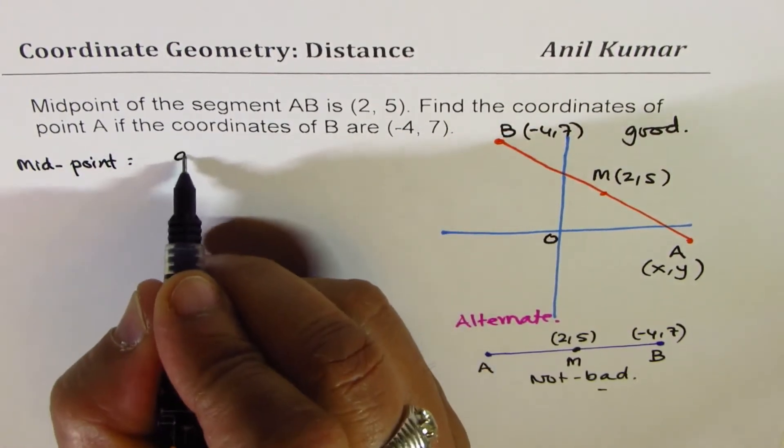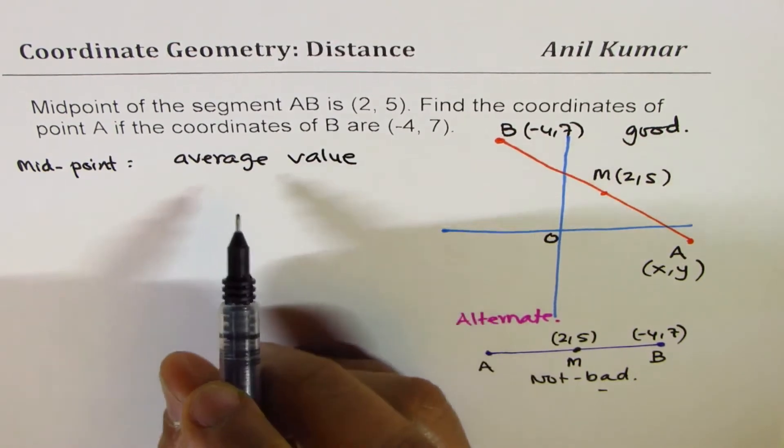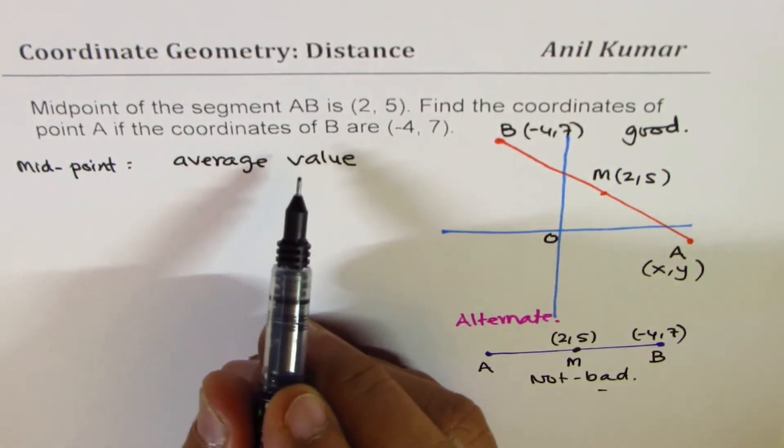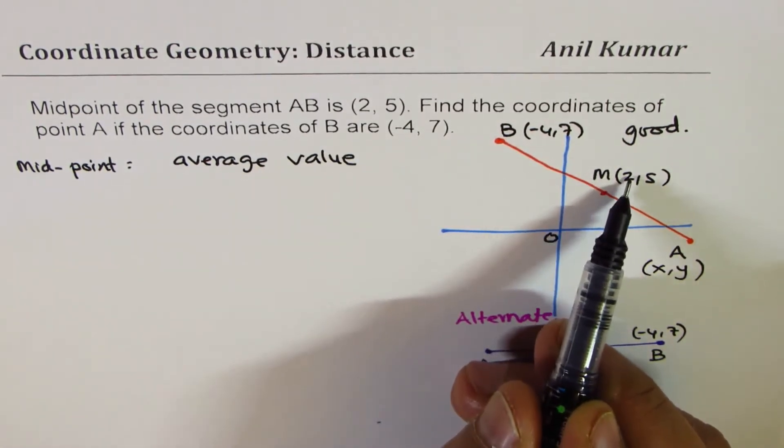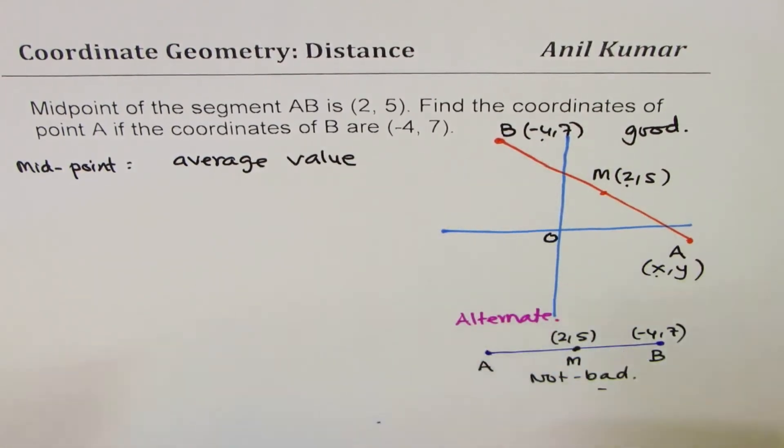Midpoint is the average value. So you don't even have to remember it is like x1 plus x2 divided by 2, nothing like this. Now we know midpoint is (2, 5). So 2 is average value of these two. 2 is the average value of these two. What is x? We don't know. So we'll write (x, y) for A.